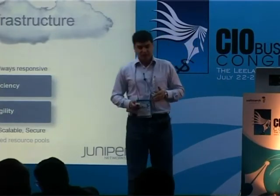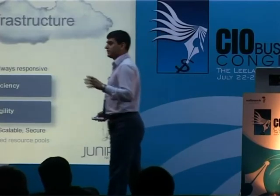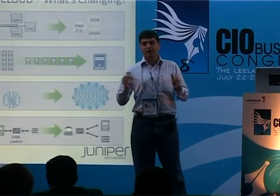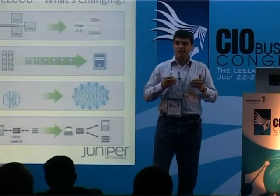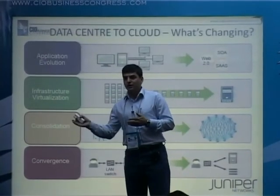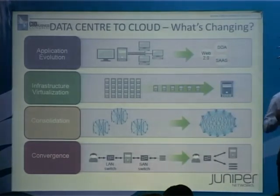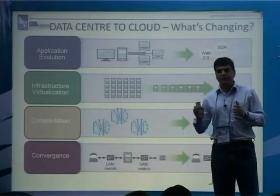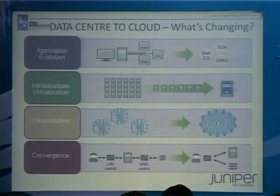Economic, scalable, secure, and dynamically shared resource pools — those are the attributes of the cloud infrastructure. But before we delve into that, let's look at what led to this. Ultimately, there is always a data center behind cloud services. In the data center space, four things have happened: a tremendous application evolution, virtualization of compute power and storage, which led to consolidation, and convergence.